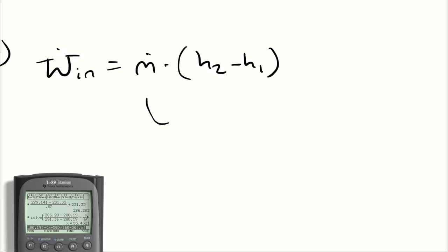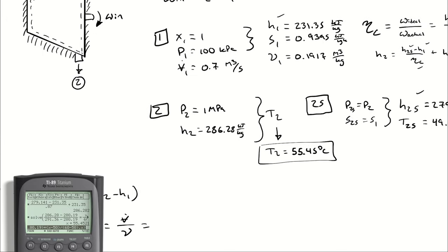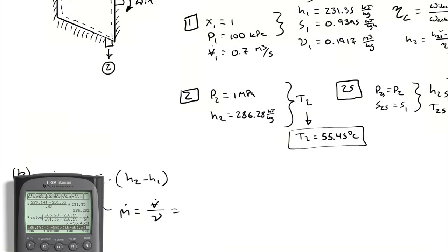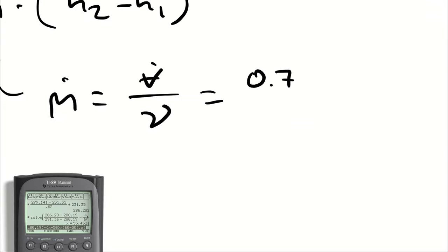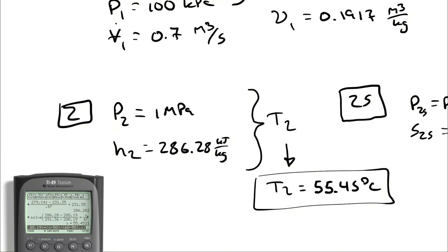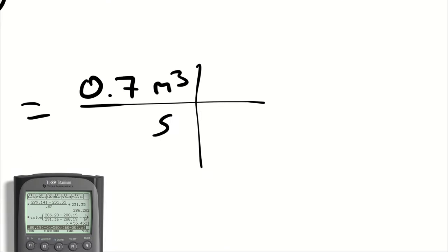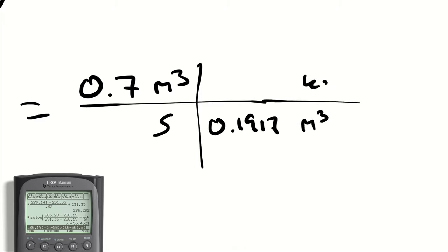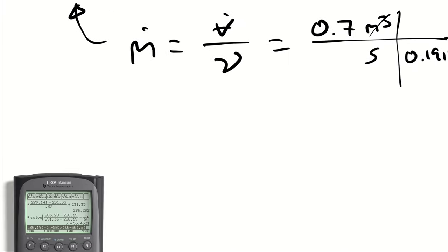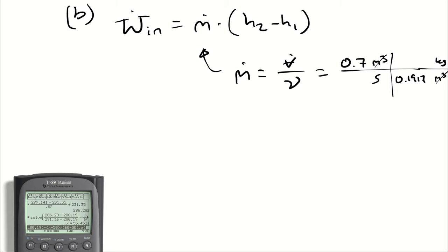So, I'm going to say mass flow rate is equal to volumetric flow rate divided by a specific volume, so 0.7 cubic meters per second, divided by my specific volume, which was 0.1917 cubic meters per kilogram. Cubic meters cancels cubic meters, and I'm left with kilograms per second, and I could calculate that number, but I don't want to, so we're just going to plug it in symbolically. Fewer opportunities for error with that.